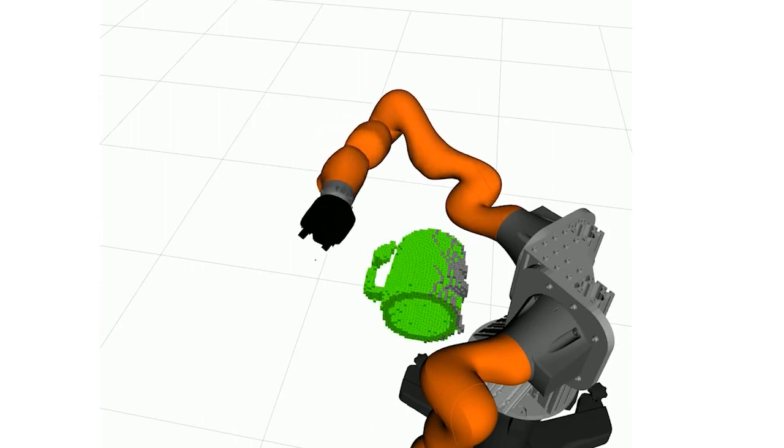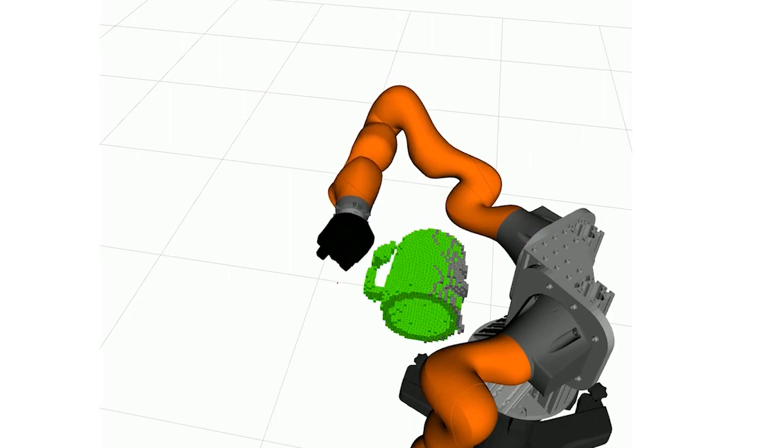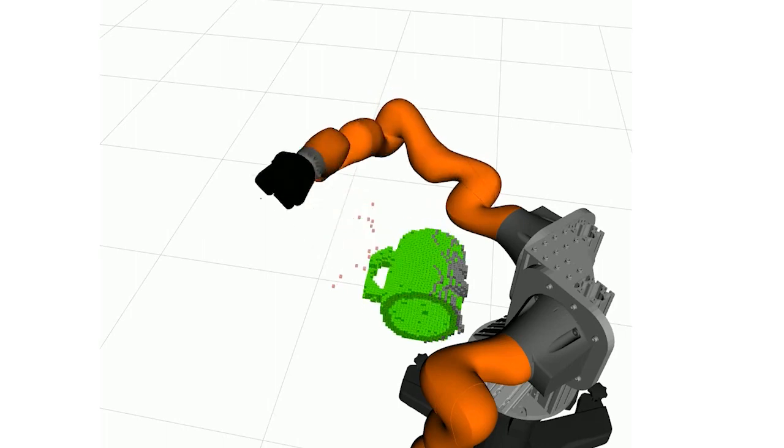As the robot moves, the shapes generated should reflect the new information gained from sensing free space and contacts. Here, after the robot bumps the mug handle, all completed shapes should update to explain the sensed contact.